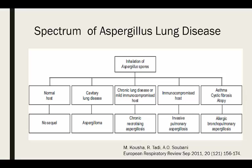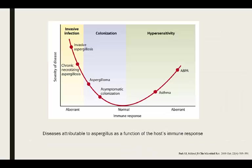There's a predisposing component to developing this disease. It's dependent on the host rather than the exposure — everybody gets exposure. For those with a normal immune response, nothing happens; they simply clear it. For those who are immunocompromised, you have the invasive spectrum of disease. And for those with a large hypersensitivity component — asthma and atopic conditions — you have allergic bronchopulmonary aspergillosis.